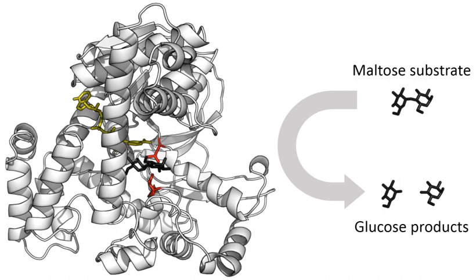Enzymes are generally globular proteins, acting alone or in larger complexes. The sequence of the amino acids specifies the structure, which in turn determines the catalytic activity of the enzyme. Although structure determines function, a novel enzymatic activity cannot yet be predicted from structure alone. Enzyme structures unfold when heated or exposed to chemical denaturants, and this disruption typically causes a loss of activity. Enzyme denaturation is normally linked to temperatures above a species' normal level. As a result, enzymes from bacteria living in volcanic environments such as hot springs are prized by industrial users for their ability to function at high temperatures, allowing enzyme-catalyzed reactions to be operated at a very high rate.